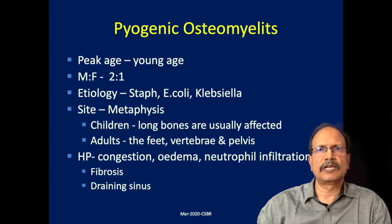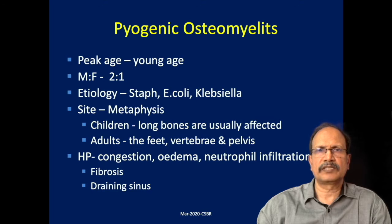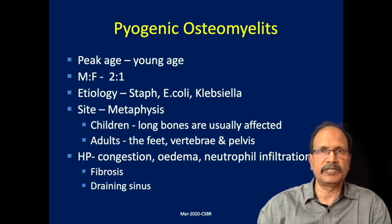Acute osteomyelitis is usually called pyogenic osteomyelitis. Mainly pyogenic bacteria are involved in this process of inflammation — that is Staph aureus, E. coli, and Klebsiella are most commonly associated with pyogenic osteomyelitis. Young age is the most common age group in which you come across pyogenic osteomyelitis in practice, and males are more prone, probably because of their activity and exposure to pathogens.